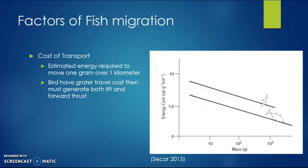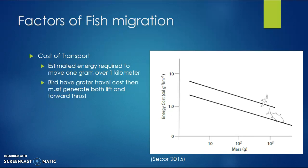Other factors for fish migration include the cost of transportation. This figure shows the estimated energy required to move one gram over one kilometer. Birds have a greater cost of travel because they must generate both lift and forward thrust, while fish have a swim bladder or fatty lipids to help them stay buoyant. As you can see with both birds and fish, as they get larger in size, the energetic cost to travel a greater distance becomes much lower.